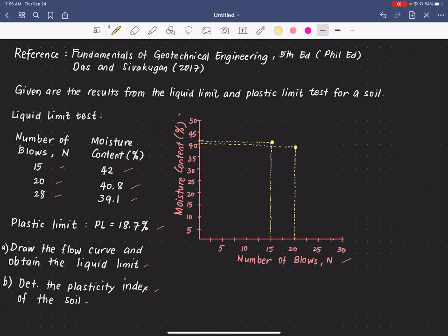And then we have the next data point which has an N of 28. So this is 27.5, so somewhere here. And it has a corresponding moisture content of 39.1, so let's say this is the 39.1 there.